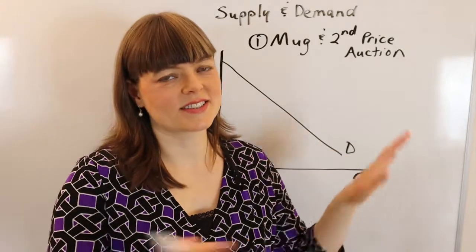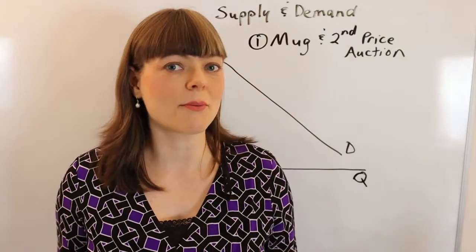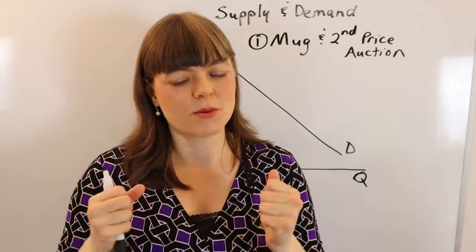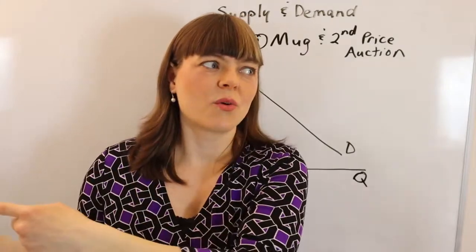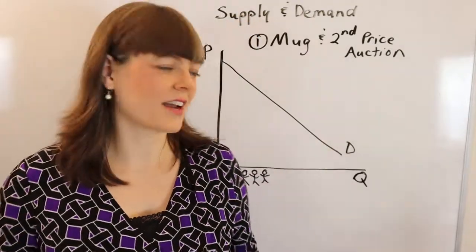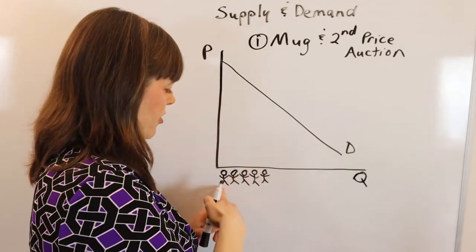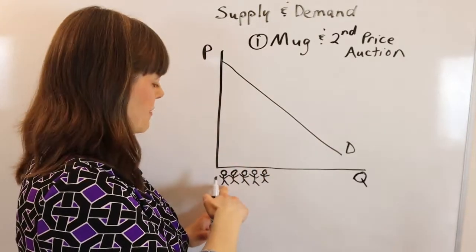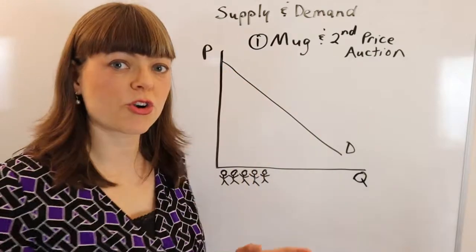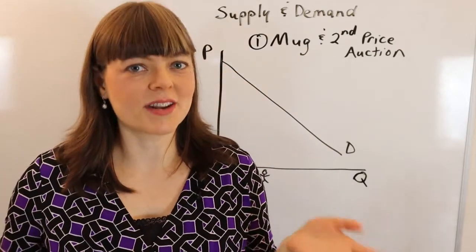You can have a discussion with them while they're standing about how they came up with the number on their note card, which they should all be holding with their place in line. Then you sit down and go through the demand curve, having them think about it as people lined up in order, just like they did a few minutes ago.